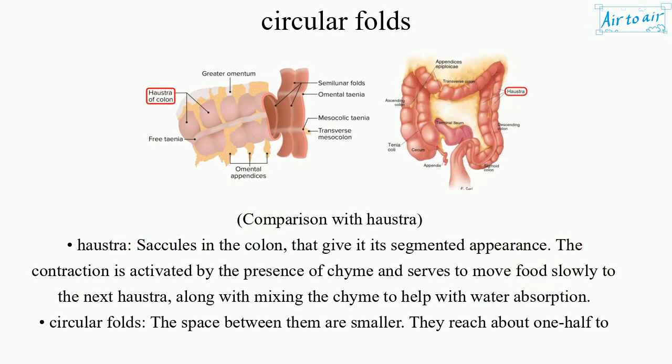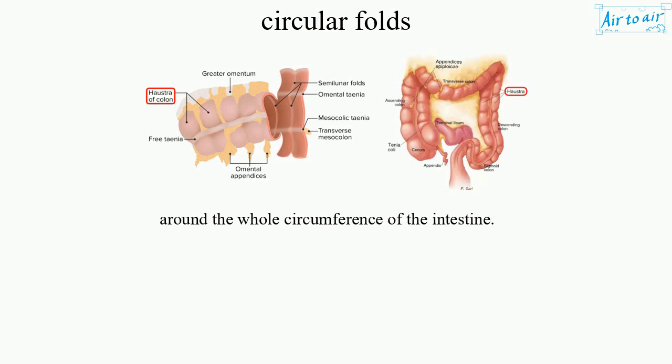Comparison with haustra: Haustra are saccules in the colon that give it its segmented appearance. Their contraction is activated by the presence of chyme and serves to move food slowly to the next haustra, while also mixing the chyme to help with water absorption. Circular folds differ in that the spaces between them are smaller, and they reach about one half to around the whole circumference of the intestine.